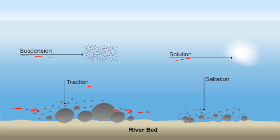Solution refers to the chemicals being transported within the water all the time. I talked about solution as a way rivers erode, but those chemicals are also moved along by the river — solution is the movement of chemicals that also cause erosion. Finally, saltation, very similar to traction, though rather than large boulders, saltation refers to much smaller stones and pebbles that tend to skip along the river bed. You're far more likely to see saltation in the upper course where the river is not as powerful and it's moving small stones and pebbles.